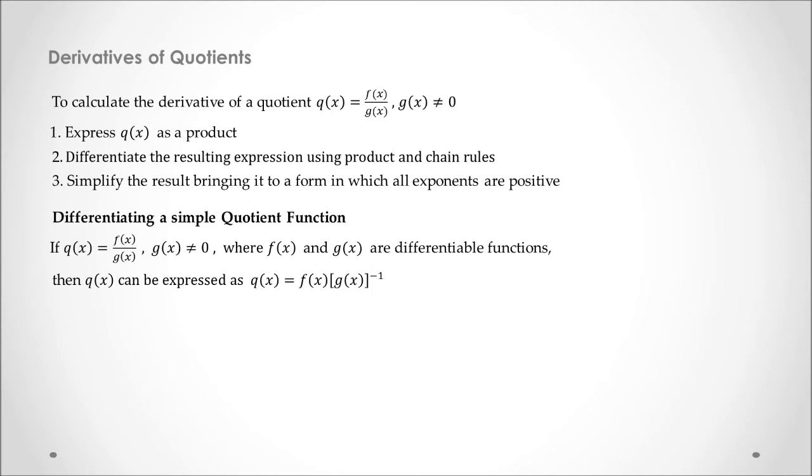Such as f(x) times g(x) from the denominator, we put it up to the numerator by making it at power minus one. As we know, g(x) at power minus one is the same as saying one over g(x).